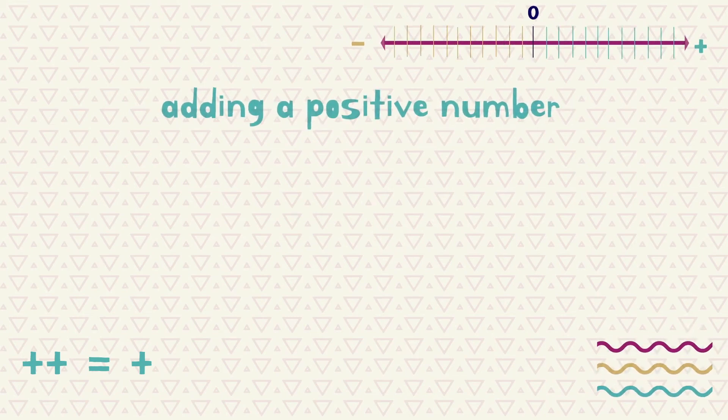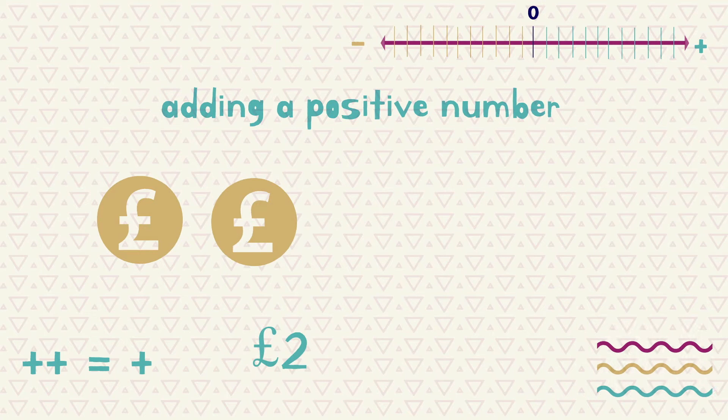So why is this? Imagine you have £2 in your bank account and you want to add a positive amount of £3 to your account. You are really just adding £3.